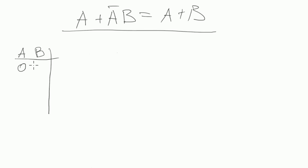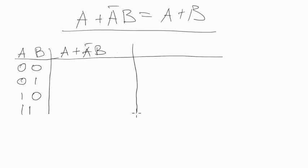So the cases are 0, 0, 0, 1, 1, 0 and 1, 1. And the parts of equality are a plus a negated b and another one a plus b. And we need to check if they are equal using truth tables, using this truth table.